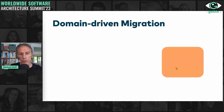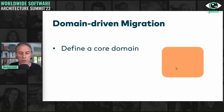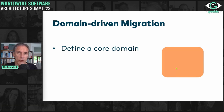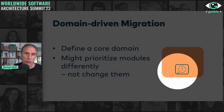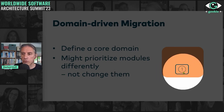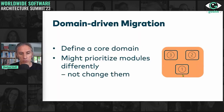Finally, there is a third approach: you define a core domain — the domain that really matters. Maybe you're changing to make shipping more reliable and want to differentiate yourself by shipping quality. You would say shipping is what matters and prioritize those modules. Due to the old system being badly structured, you might not be able to make a very clean cut, but maybe that part is mostly shipping-related. You prioritize that and deal with the rest with less priority.